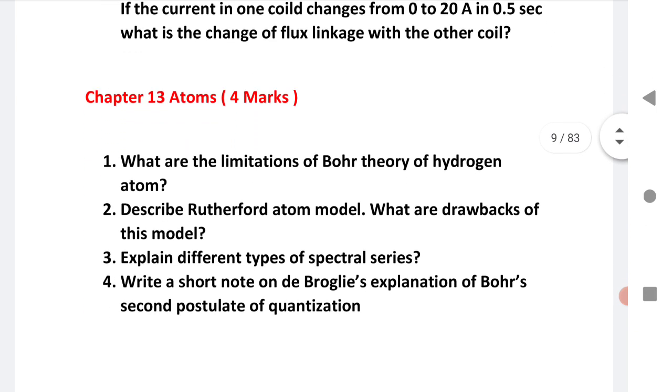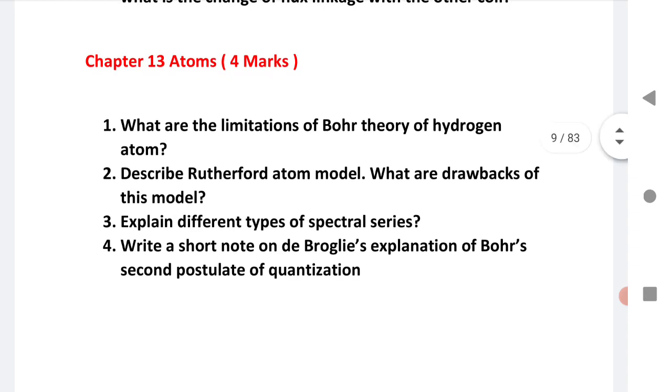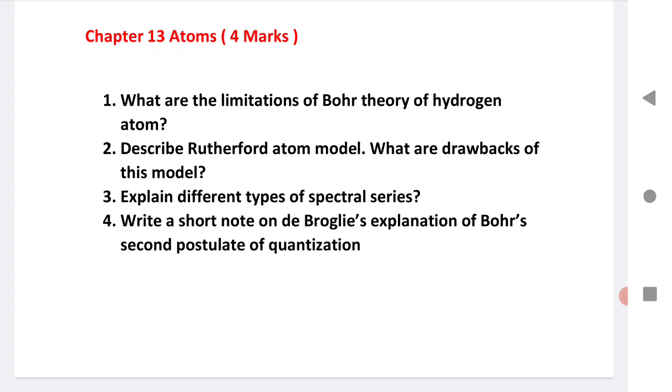Chapter 13, Atoms, 4 marks: limitations of Bohr's theory of hydrogen, describe Rutherford atomic model and its drawbacks, explain the different types of spectrum series, write a short note on de Broglie's explanation of Bohr's second postulate of quantization.